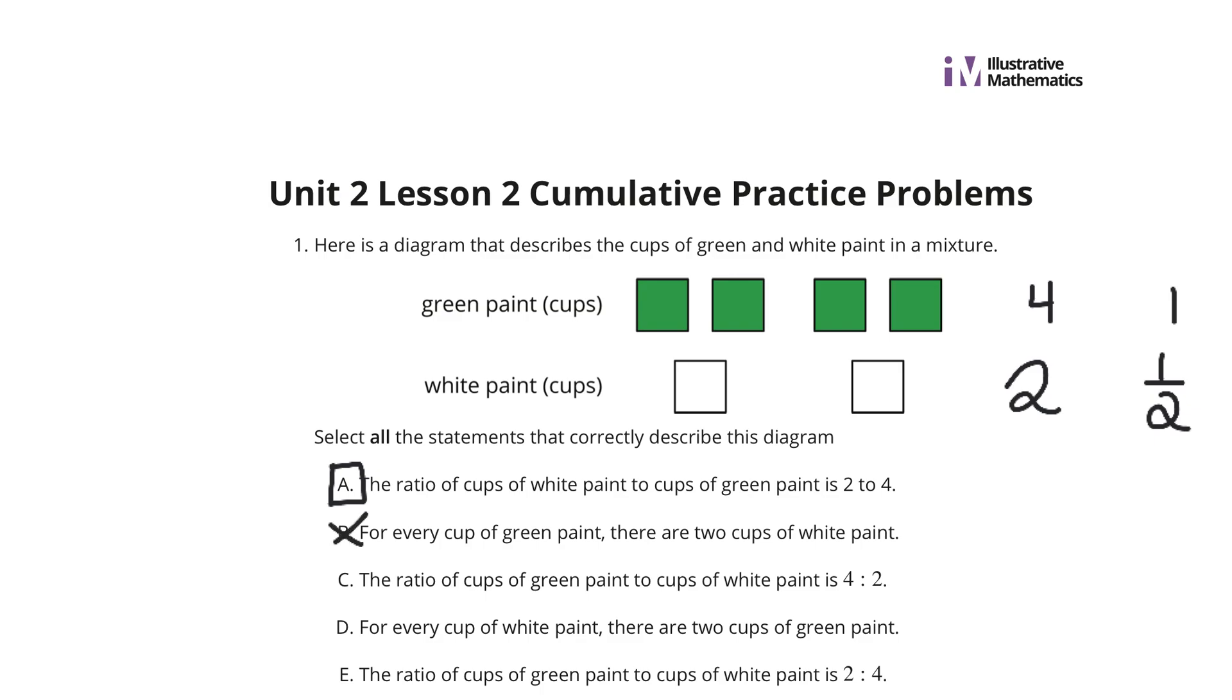C, the ratio of cups of green paint to cups of white paint is 4 to 2. That is true. Green to white is 4 to 2.